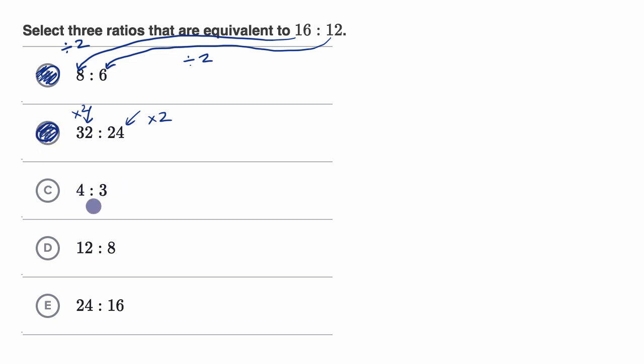What about four to three? Well, to go from 16 to four, we would have to divide by four. And to go from 12 to three, we are going to divide by four as well. So we're dividing by the same thing, each of these numbers. So this is also going to be an equivalent ratio. So we've selected our three, so we are essentially done.